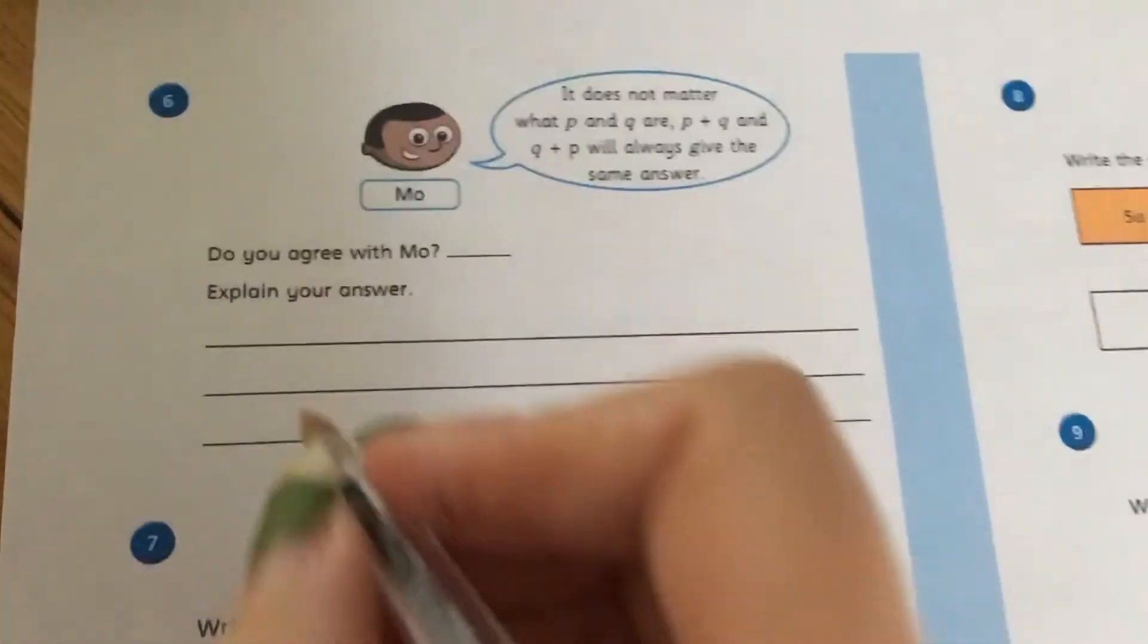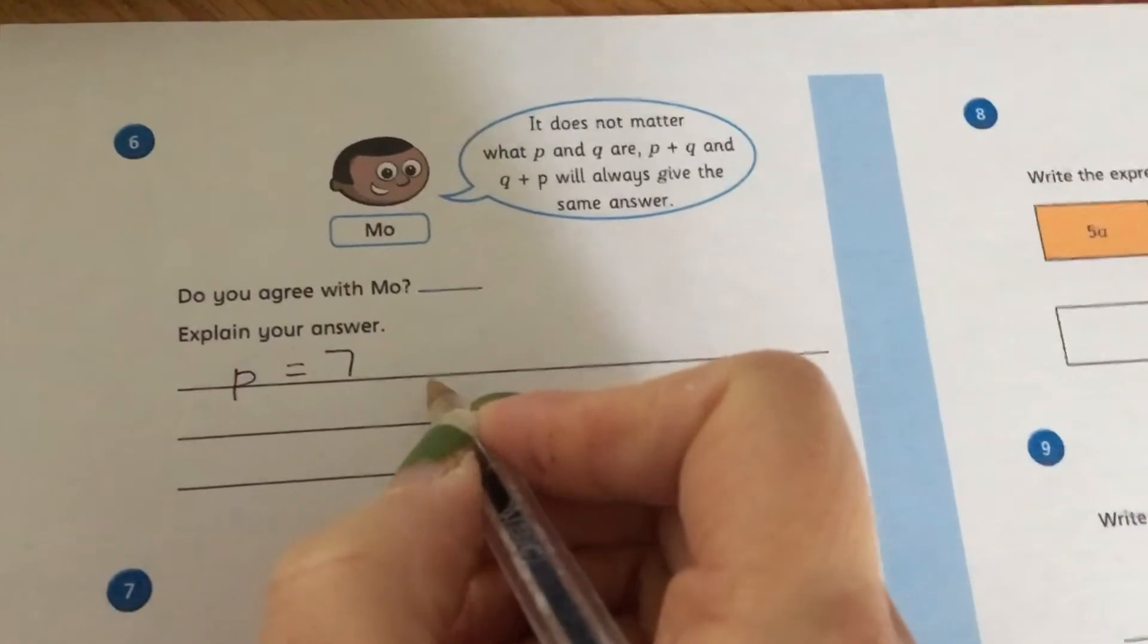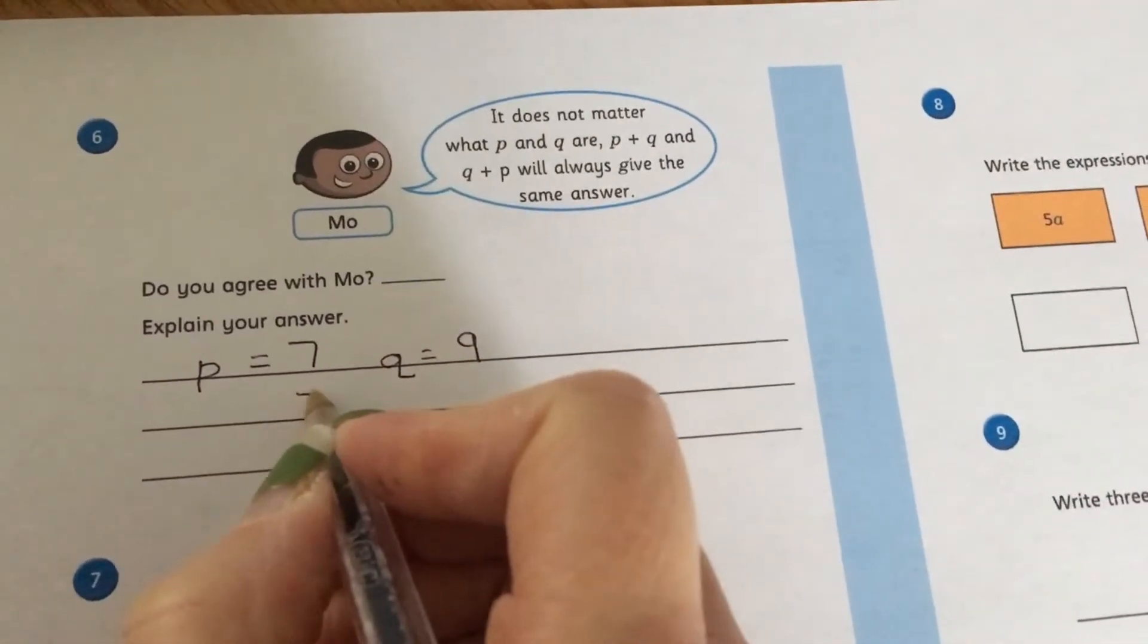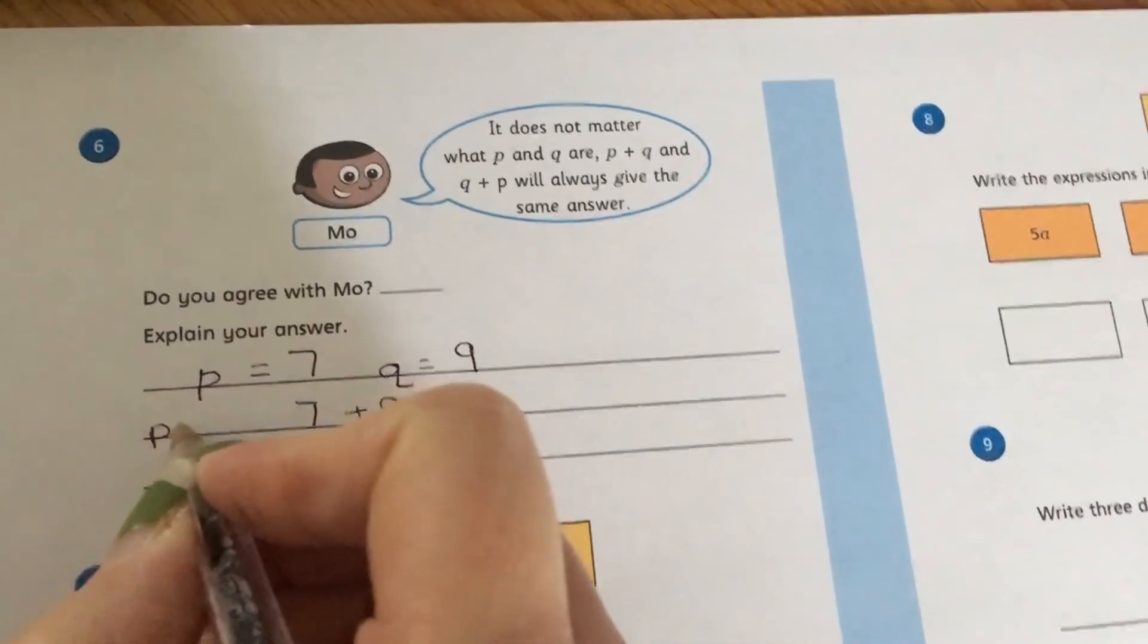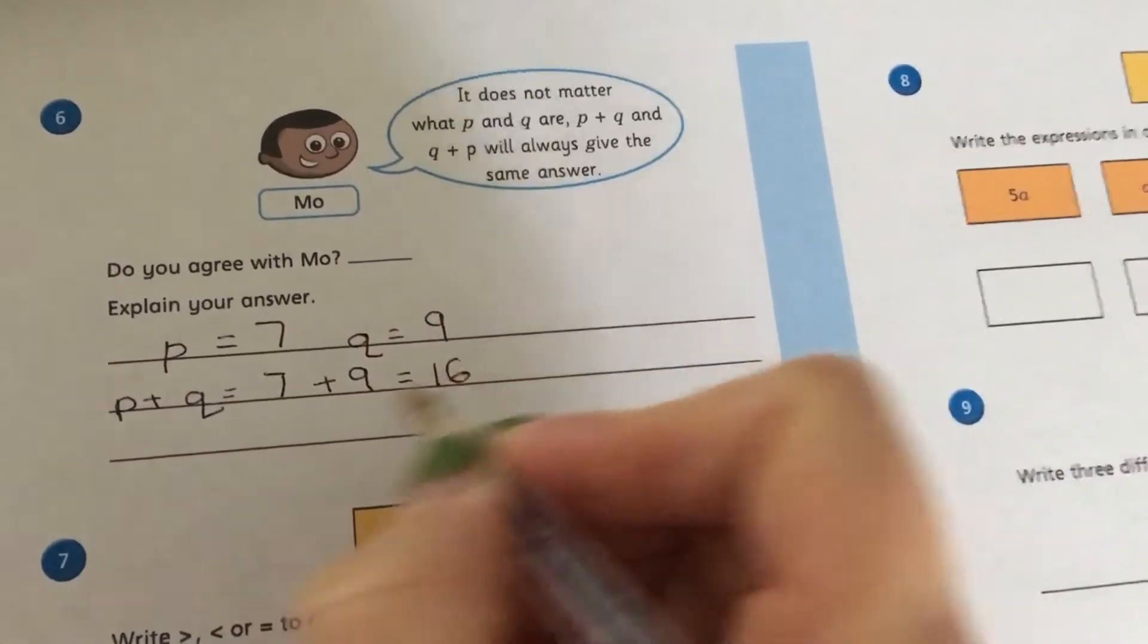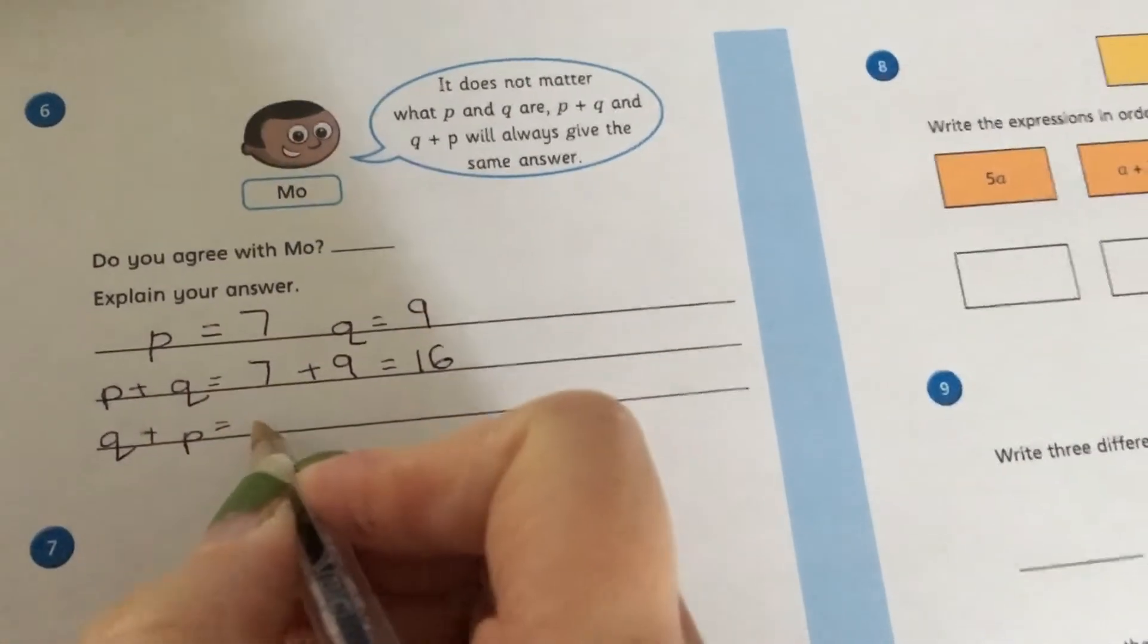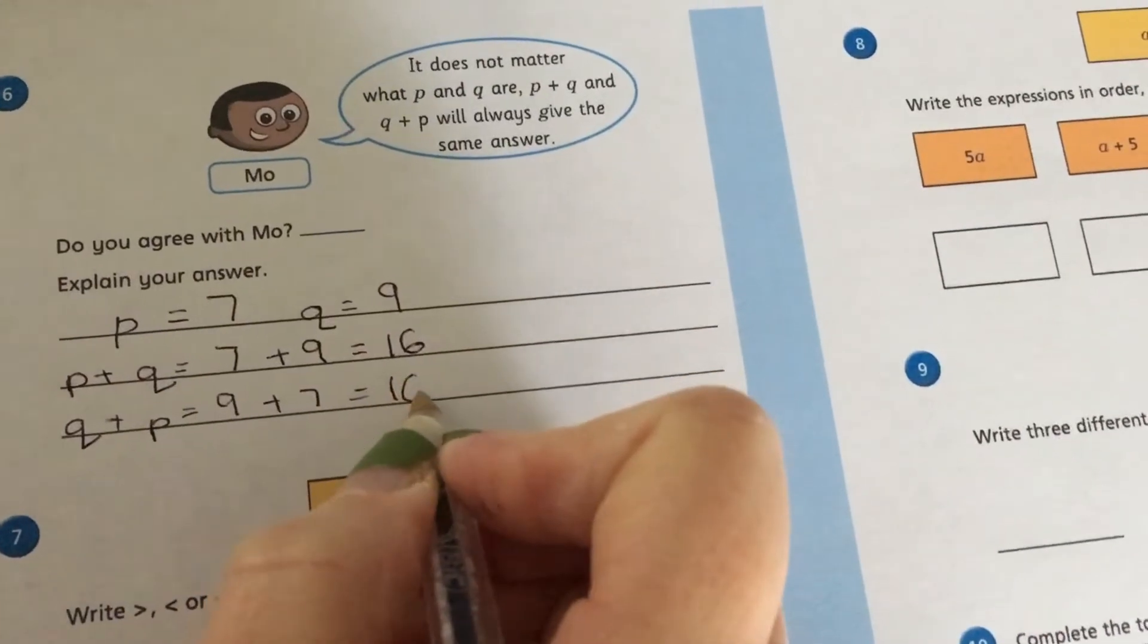So, you know, if P, for example, was 7 and Q was 9, we could say, well, 7 add 9, so that's P plus Q, is 16. And if I did Q plus P, so that's 9 add 7, it will still be 16 because it's commutative.